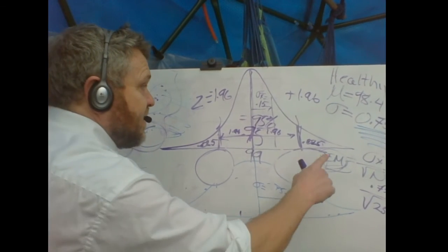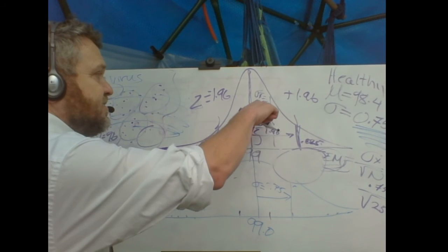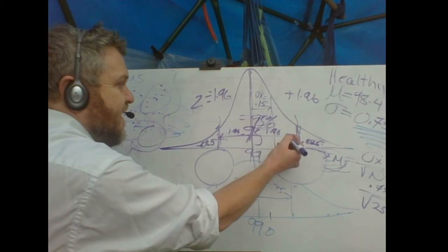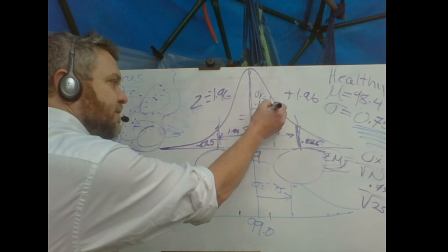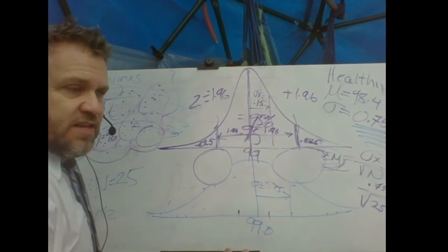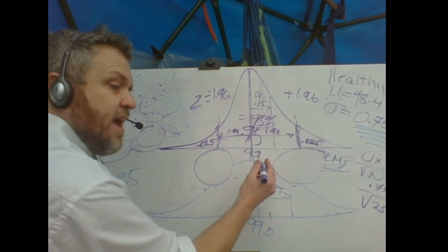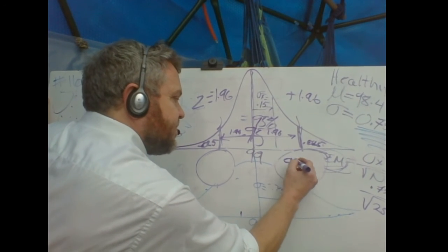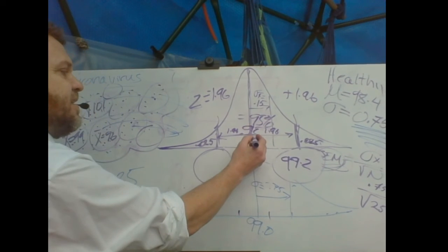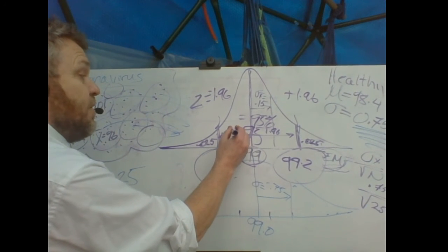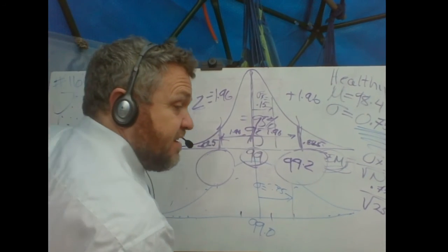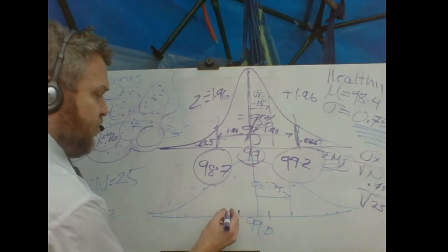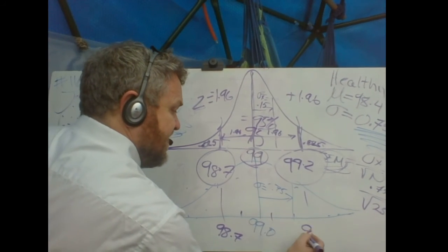That Z score means we go 1.96 Z scores in this direction, 1.96 Z scores in this direction, and that's going to give us our numbers. I can say, how big is each standard deviation? How big is each of these Z scores? 0.15. So, 1.96 times 0.15, and that's going to give me a certain value. I add that to 99, and that gives me, I think it's 99.2. And then, I take 99, which is our mean, and I subtract 1.96 standard error. So, 1.96 times 0.15. I subtract that from 99, and I get 98.7. 98.7, 99.2. That's what I got. 98.7, 99.2.